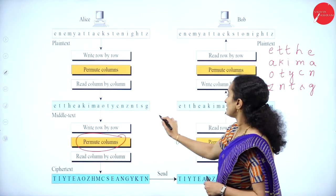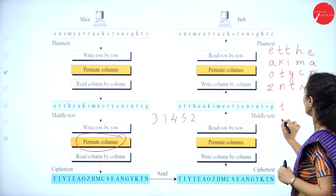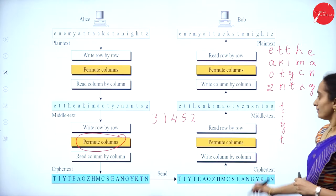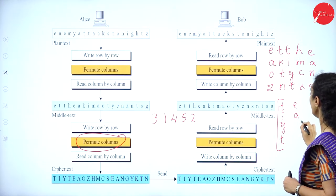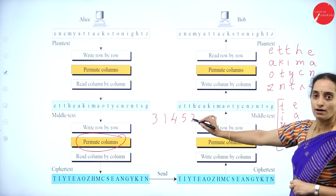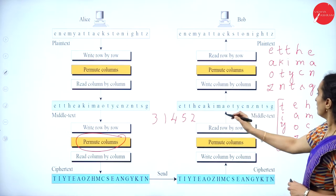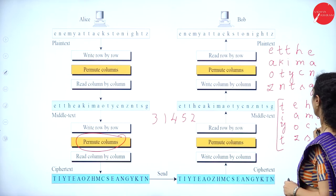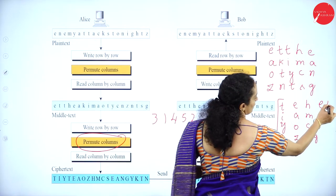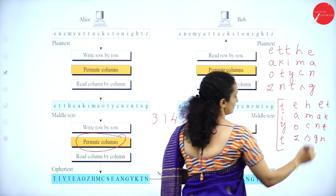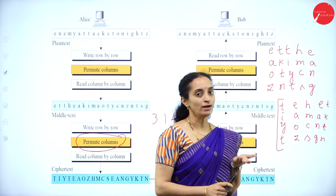Now we permute the columns using the same key values: 2, 3, 1, 4, 5. After permutation, column 2 gives T-I-Y-T, column 1 gives E-A-O-Z, column 4 gives H-M-C-Z, column 5 gives E-A-N-G, and column 3 gives T-K-T-N. This gives us the permutation of the columns in the second or middle ciphertext.